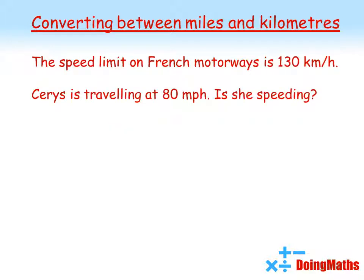Now, it's also useful to be able to convert to solve problems such as this one. Here we have that the speed limit on French motorways is 130 kilometers per hour. Keris is traveling at 80 miles per hour. We want to work out if she's speeding or not. It doesn't matter whether you change the French speed limit into miles, or Keris' speed into kilometers per hour. Either way will work.